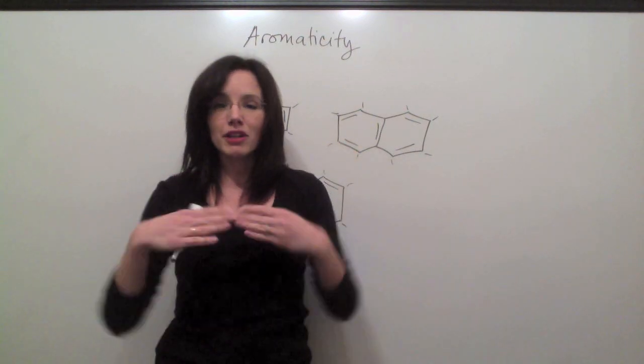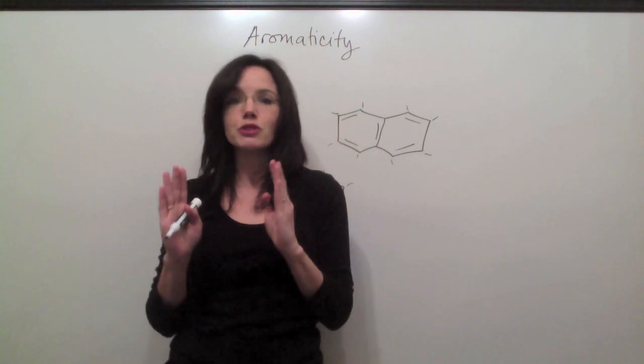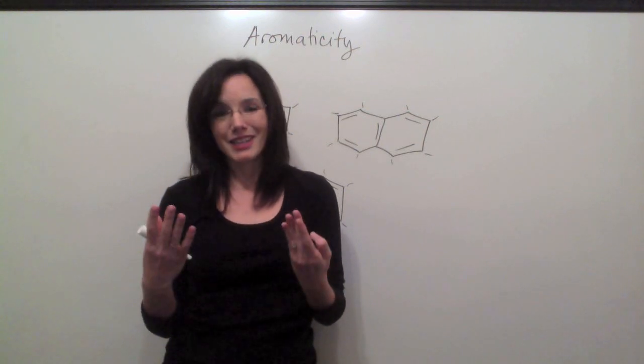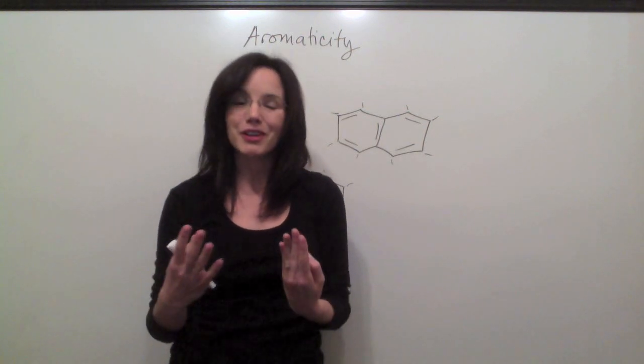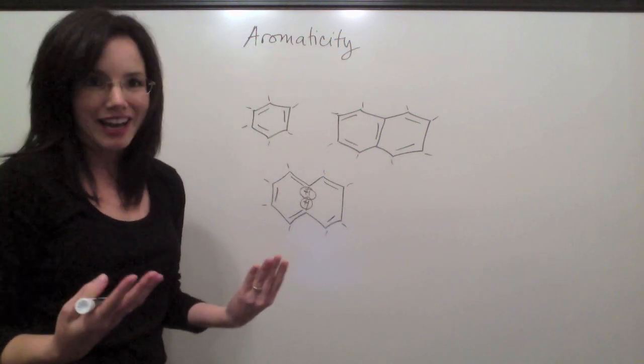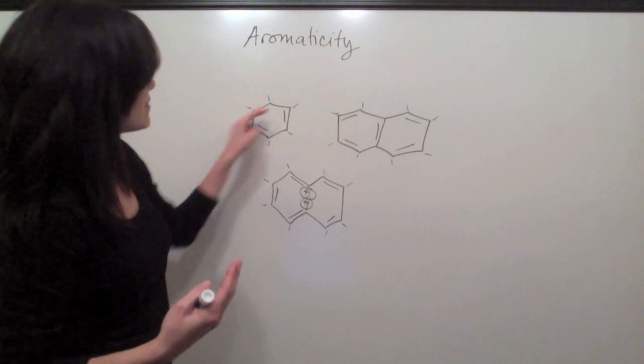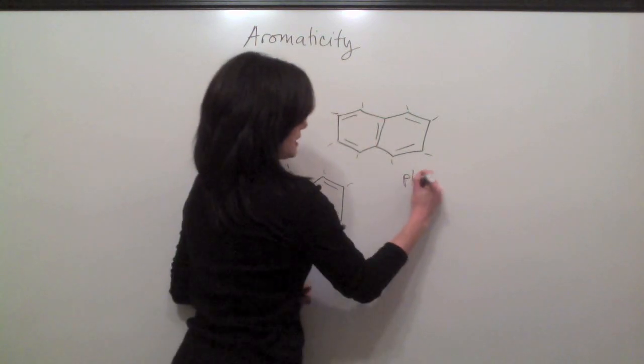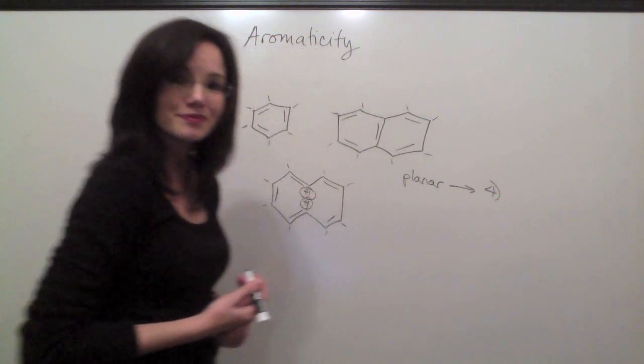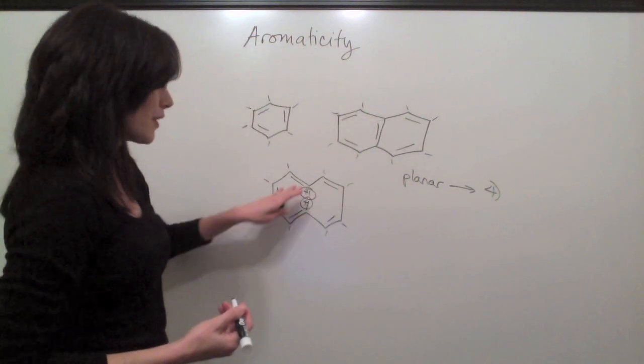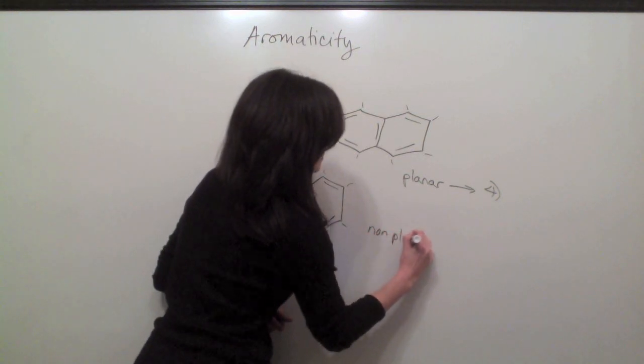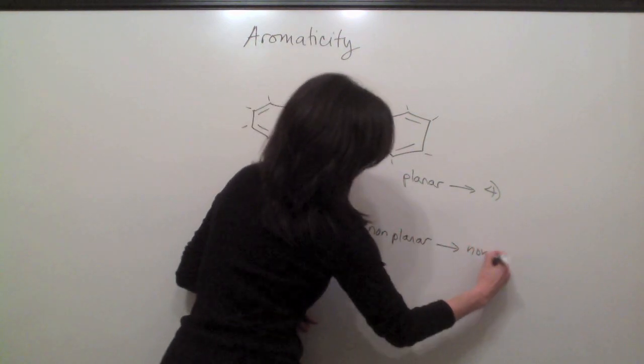And a non-planar molecule actually forces its p orbitals out of alignment, which prevents the electron flow from happening smoothly. In other words, it's non-aromatic. It prevents aromaticity. So if you want to know if a molecule is planar or not, just look at its hydrogens. If all the hydrogens are on the exterior, it's planar, which means you can go on to step four. And if there are some hydrogens on the interior, that means it's non-planar, which means it's non-aromatic.